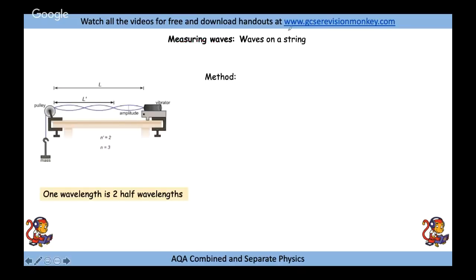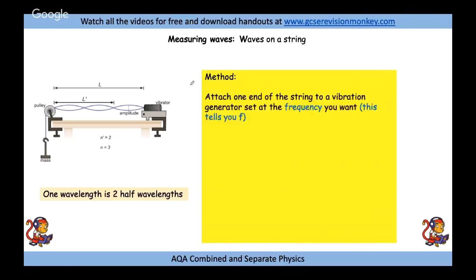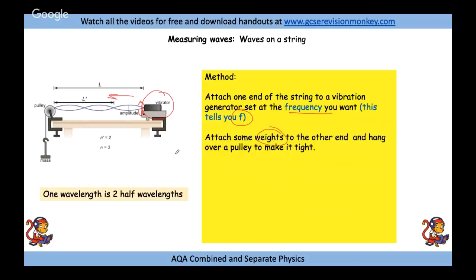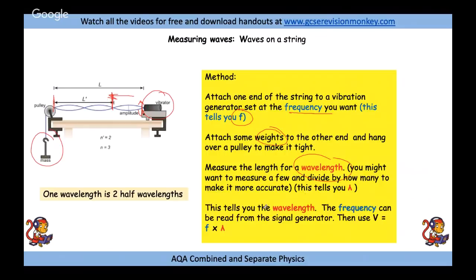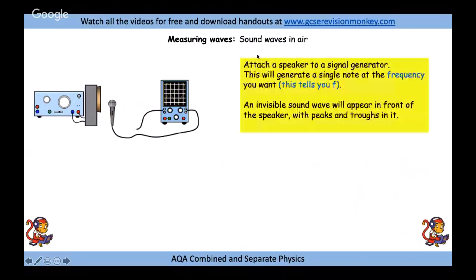For waves on a string: set the vibration generator to the desired frequency. The generator makes the wire move up and down, creating a transverse wave along the string. Attach weights at the other end via a pulley to keep the string taut so the waves are visible. Measure the length of one wavelength — one wavelength includes an up bit and a down bit. Use that wavelength and the frequency from the signal generator in v = fλ to find the wave speed.